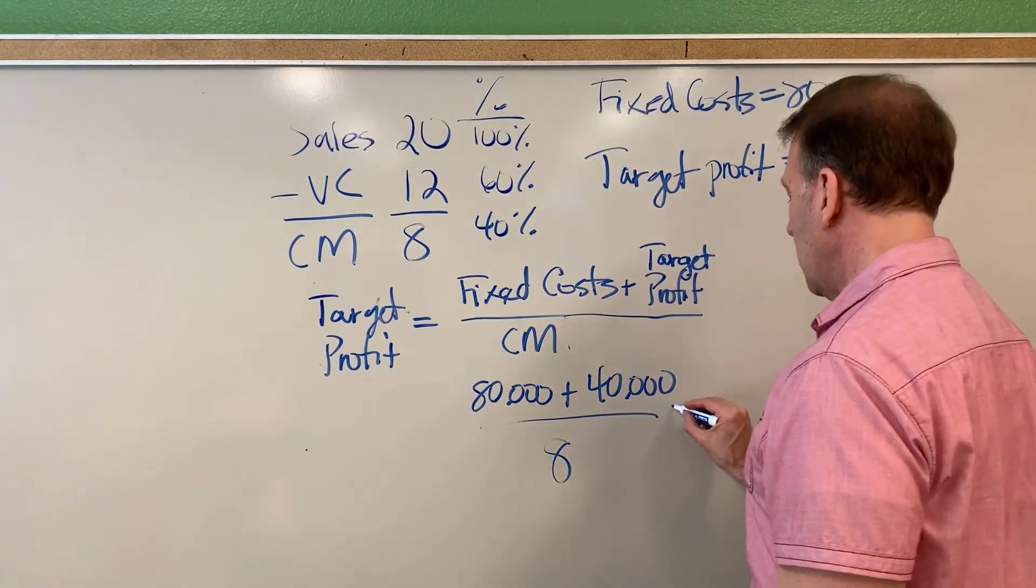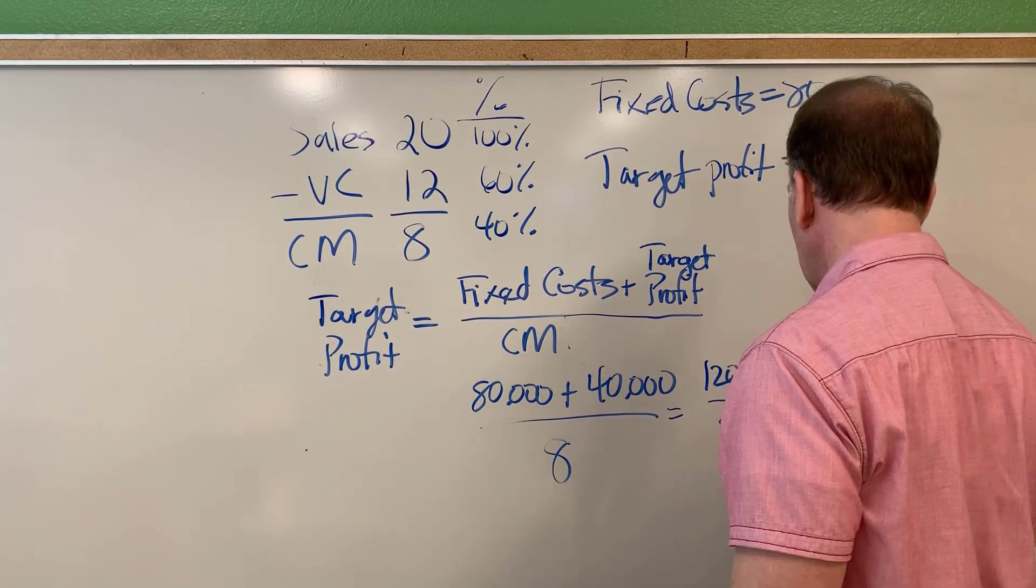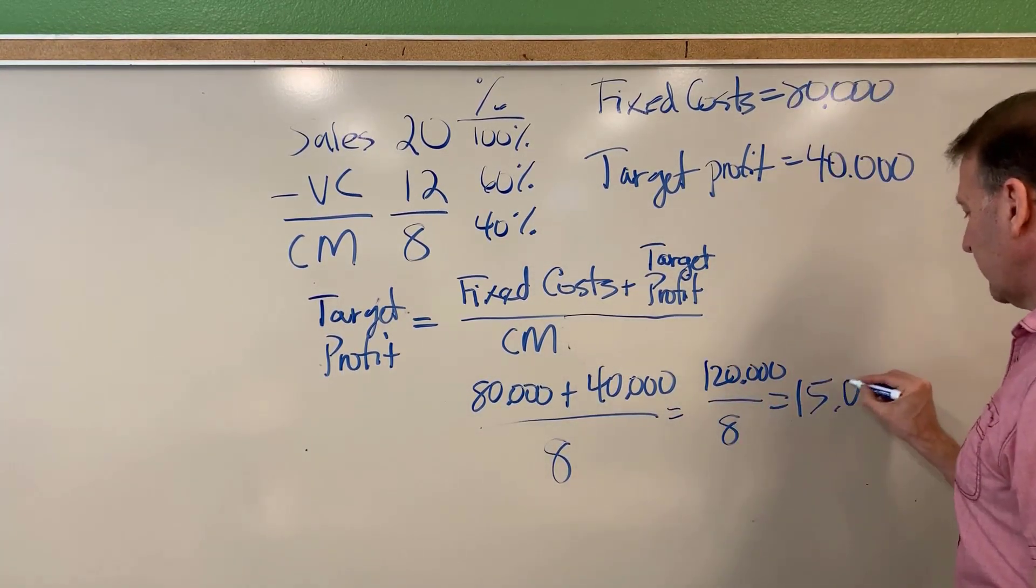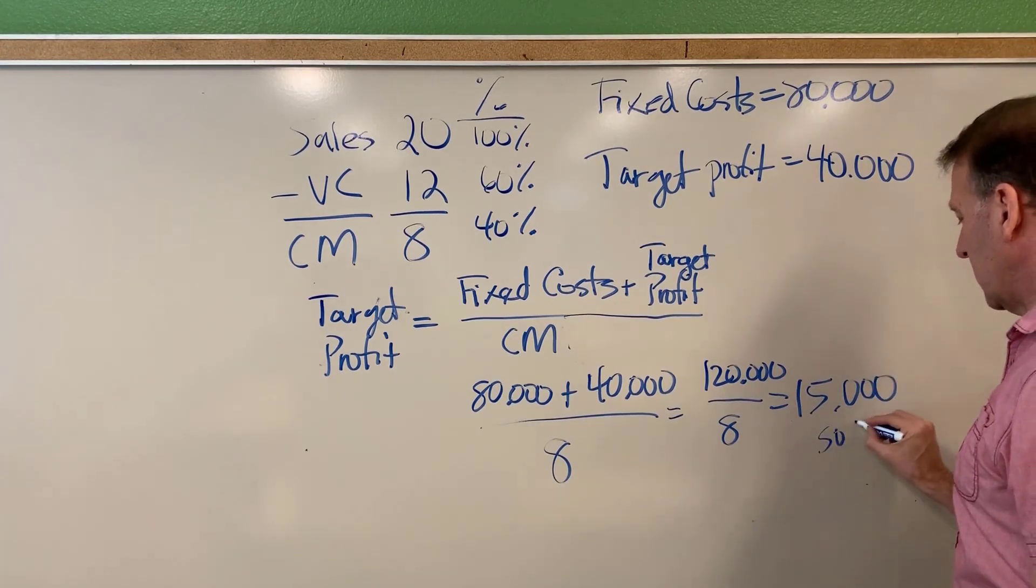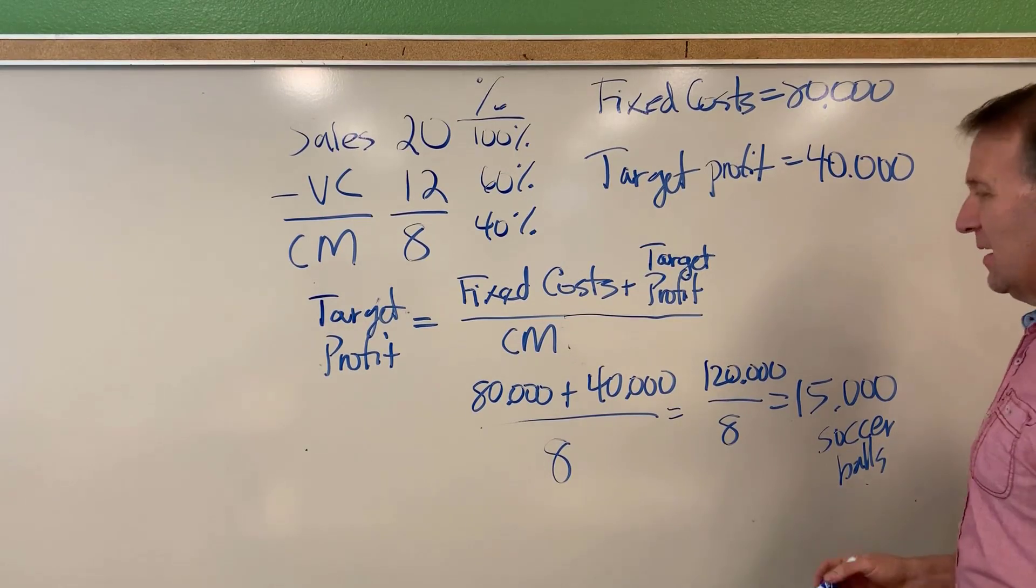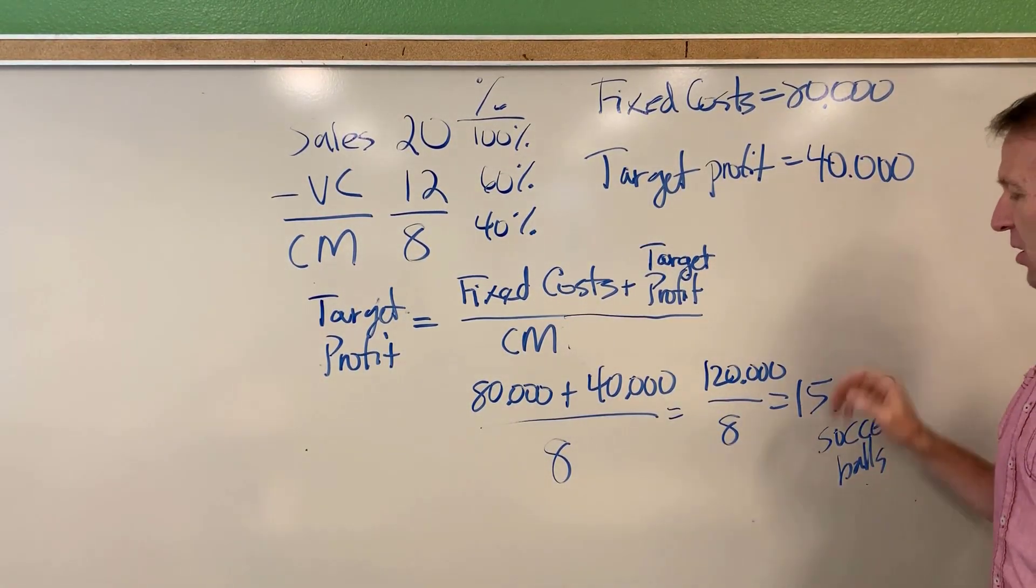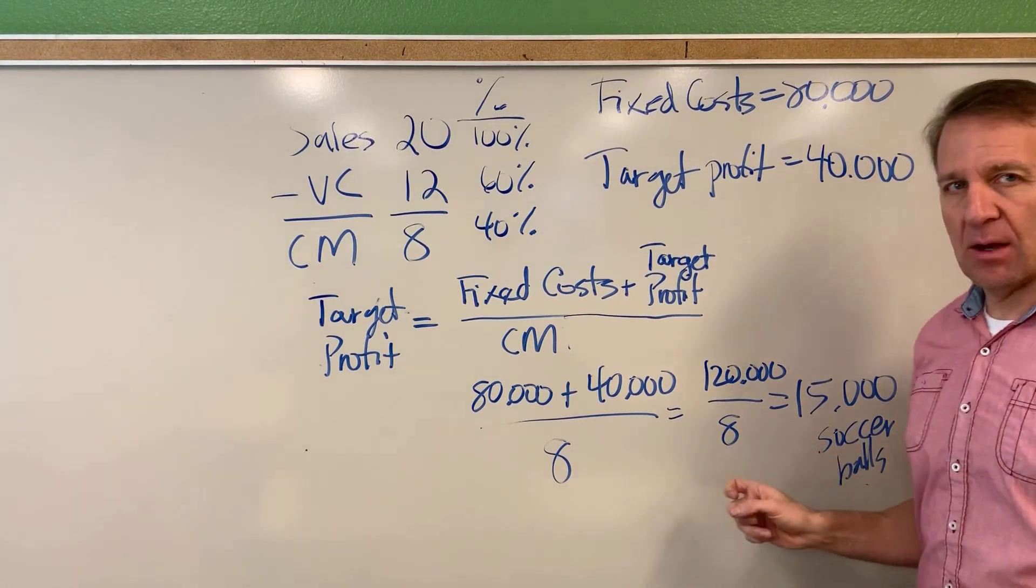Fixed costs are 80,000 plus target profit of 40,000 divided by - every time I sell a soccer ball, I'll have eight dollars left over - so this is 120,000 divided by eight, which gets us 15,000 soccer balls. To achieve a target profit of 40,000, we need to sell 15,000 soccer balls.